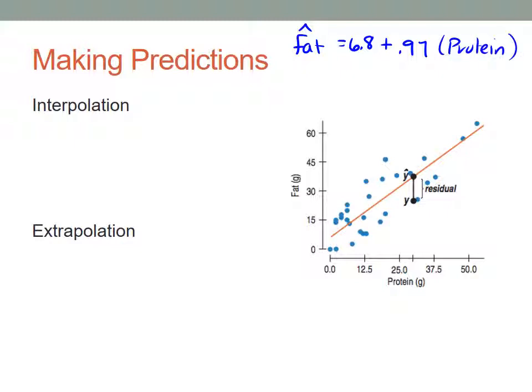We can use that equation to start to make some predictions. There are two types of predictions that we can make. We can do a prediction using interpolation, that's predicting a value that is within the range of our data.